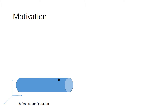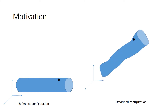Consider this cylindrical solid object in a reference configuration. Assume that it takes this mangled form once it has deformed. The black dot on each configuration corresponds to the same material point.